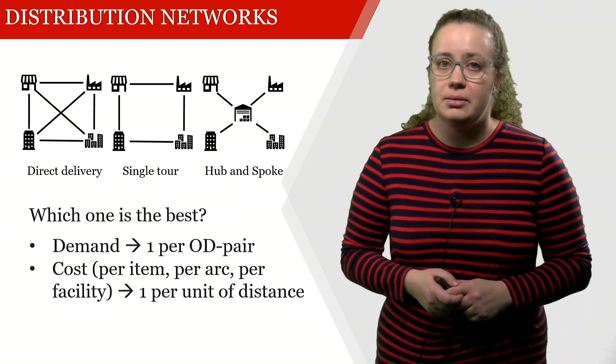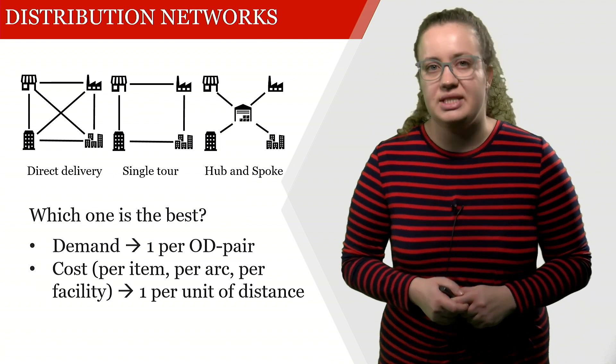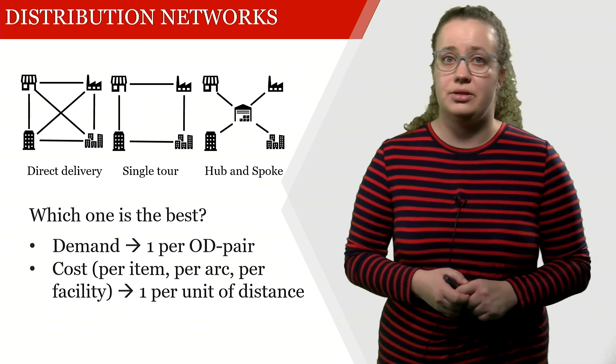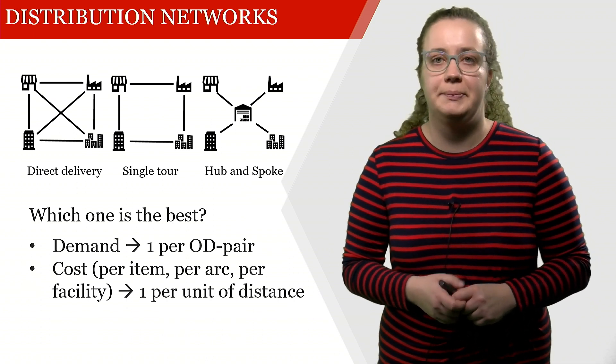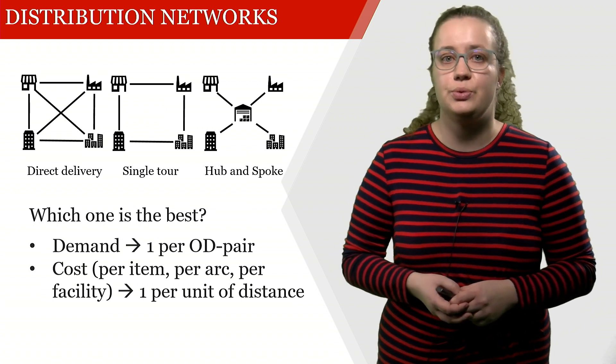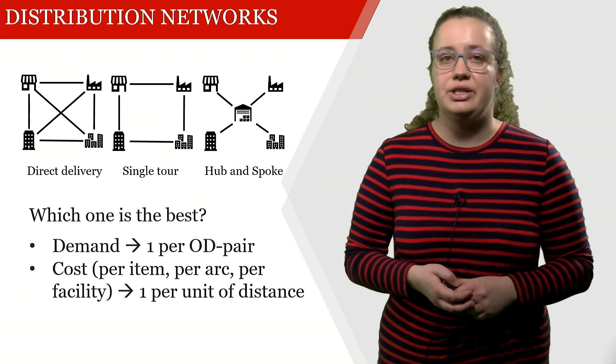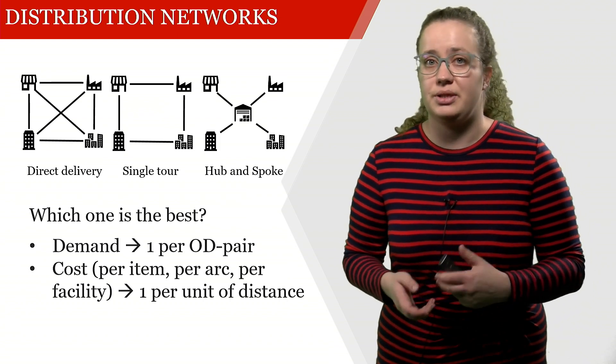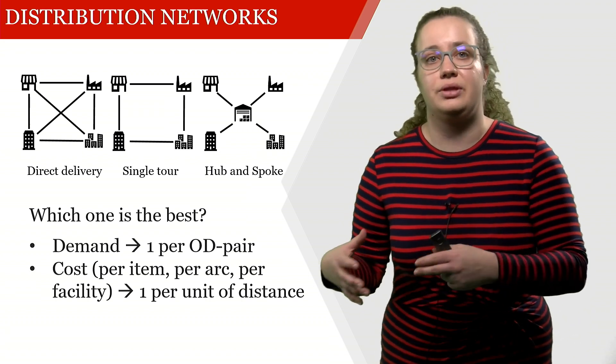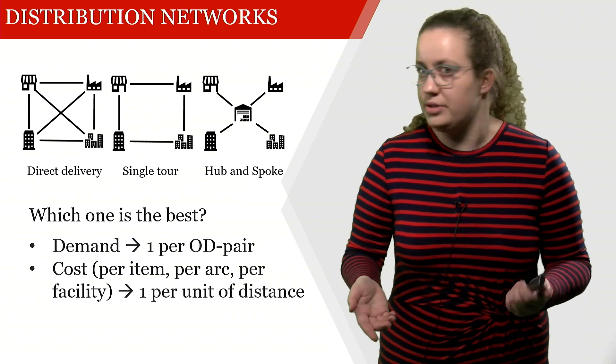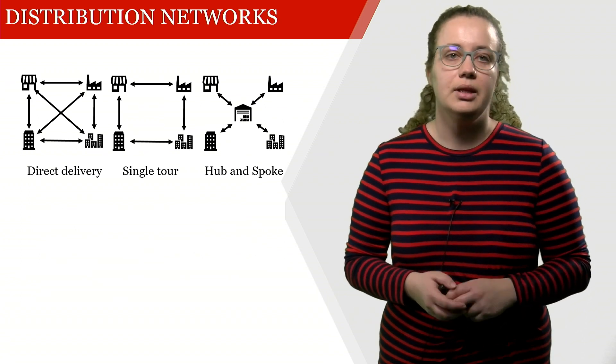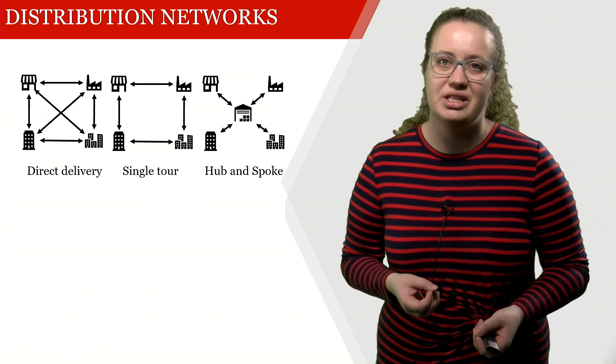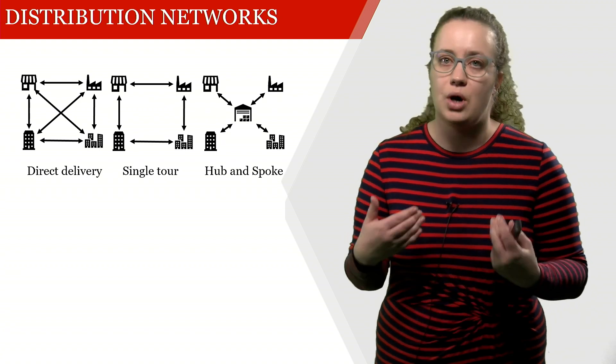We have costs per item, per arc, and per facility. If we open the warehouse, we have to pay one unit. If we connect the warehouse with the store, we pay 0.7 because half of the square root of 2 is 0.7, give or take. If we directly connect the two consumers, the warehouse costs us 1, but if we diagonally connect the warehouse with the consumer on the bottom right, this costs us 1.4, so square root of 2. Now let's look at this distribution network and see how much it's going to cost us to build and operate it.